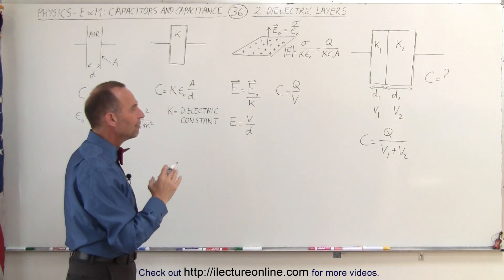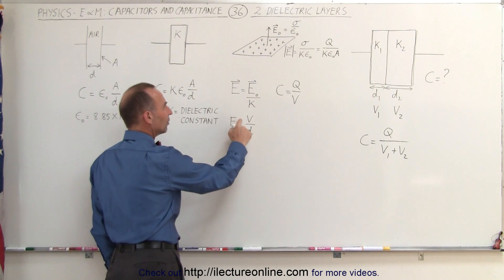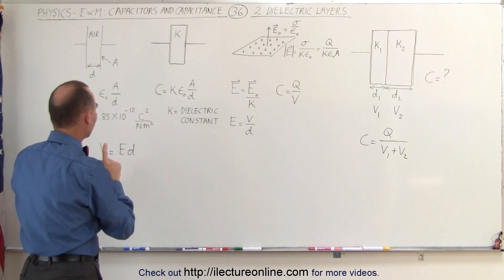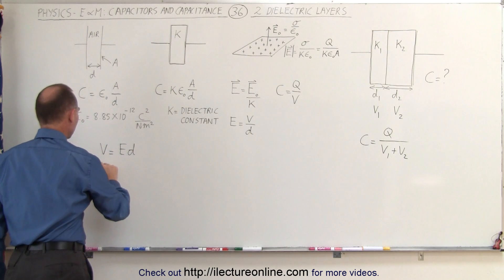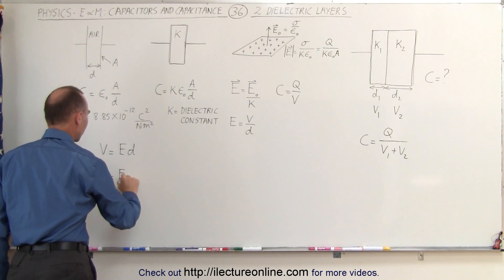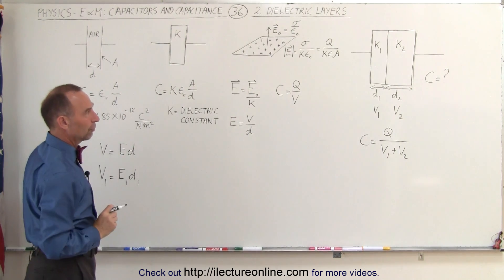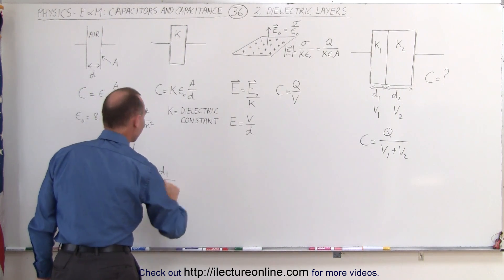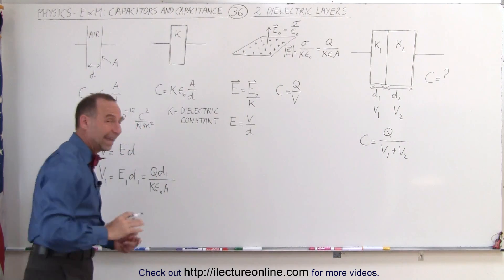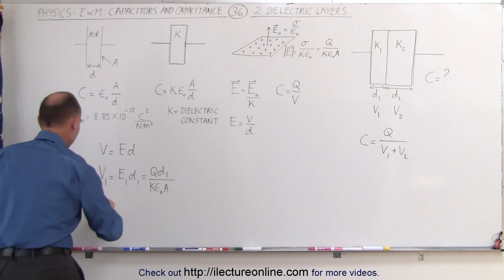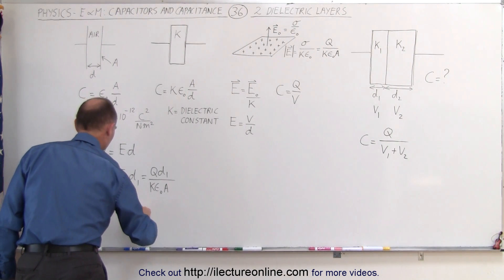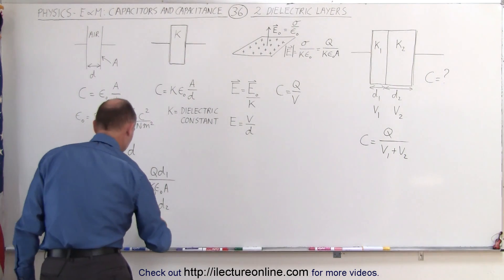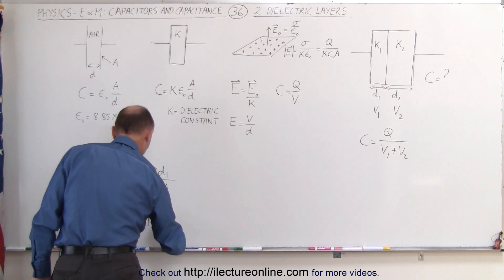Can we figure out what V1 and V2 are equal to? Going back, we can see that E is equal to V over D, or V is equal to the electric field strength times D. The electric field strength can be found using the charge density equation, which means the potential across the first layer V1 equals E1 times D1. Substituting, this equals Q times D1 divided by K1 times epsilon sub nought times A. We can do the same for V2: V2 equals E2 times D2, which equals Q times D2 over K2 times epsilon sub nought times A. Note that the area of the plates is the same for both dielectrics.